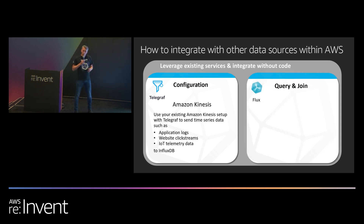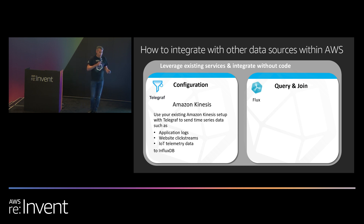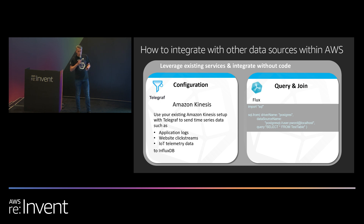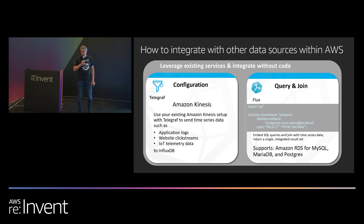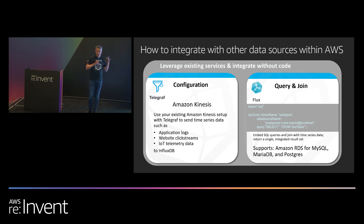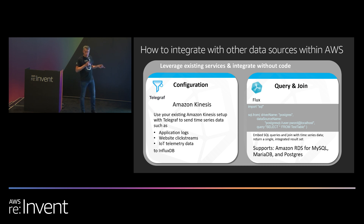Secondarily, query and join. Within InfluxDB Cloud today, we have a query language called Flux. Flux is a language for working with data where it resides. It obviously allows you to query data inside of InfluxDB, but that's not all. Flux also allows you to join your non-time series data with other data sources. In the case of this query, I'm writing a SQL from statement — select everything from a test table — which allows me to embed SQL queries right inside my Flux query and join my non-time series data with my time series data.